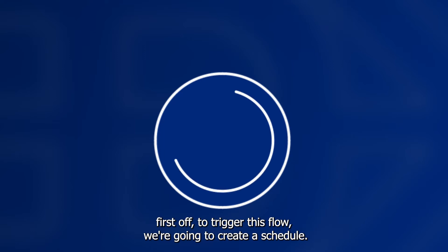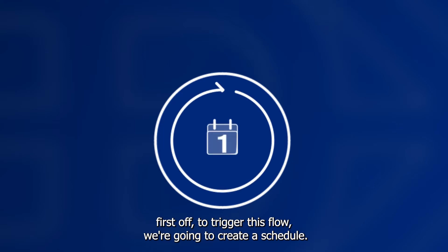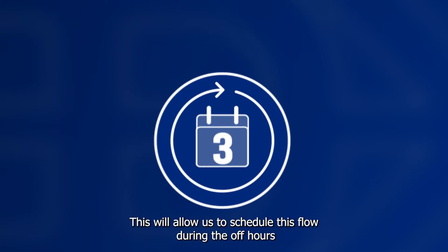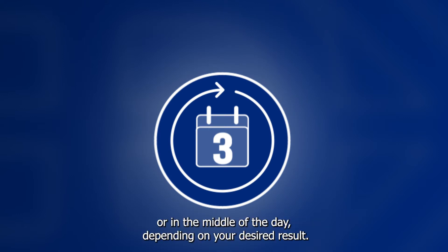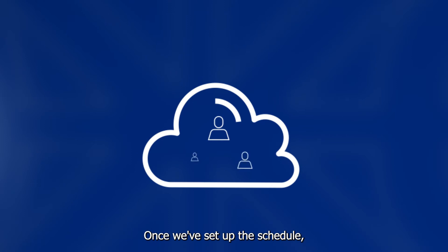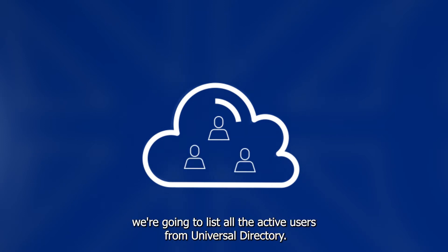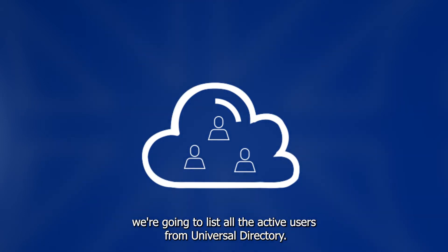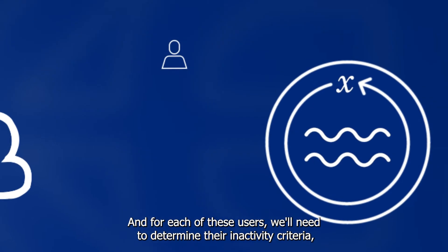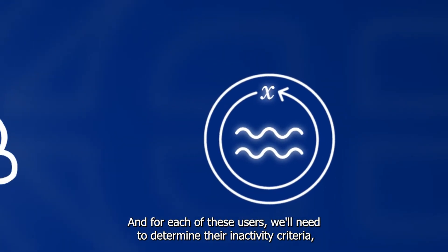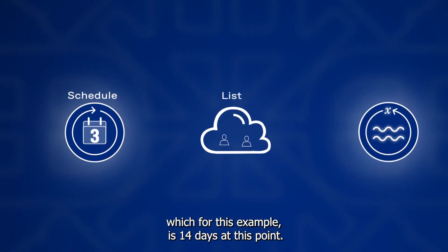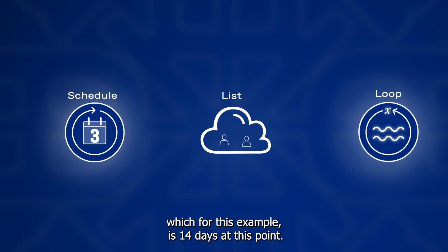To trigger this flow, we're going to create a schedule. This will allow us to schedule this flow during the off hours or in the middle of the day, depending on your desired result. Once we've set up the schedule, we're going to list all the active users from Universal Directory. And for each of these users, we'll need to determine their inactivity criteria, which for this example is 14 days.